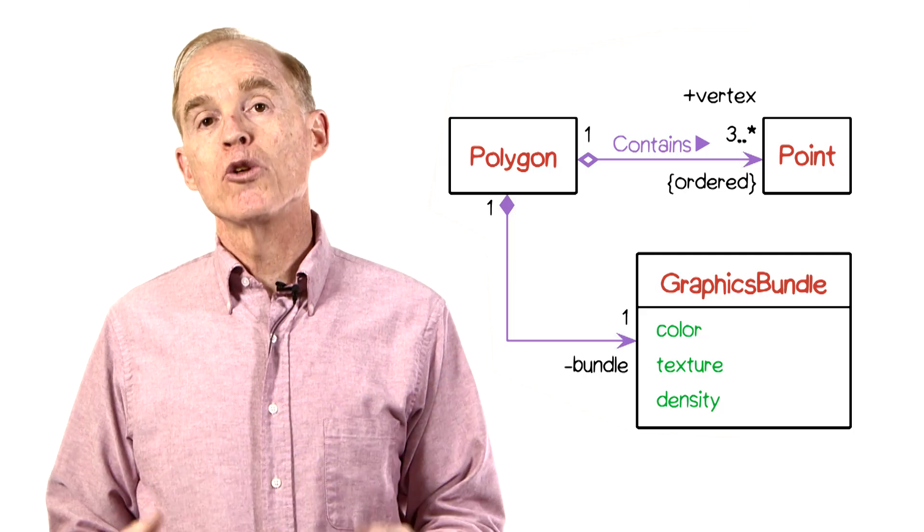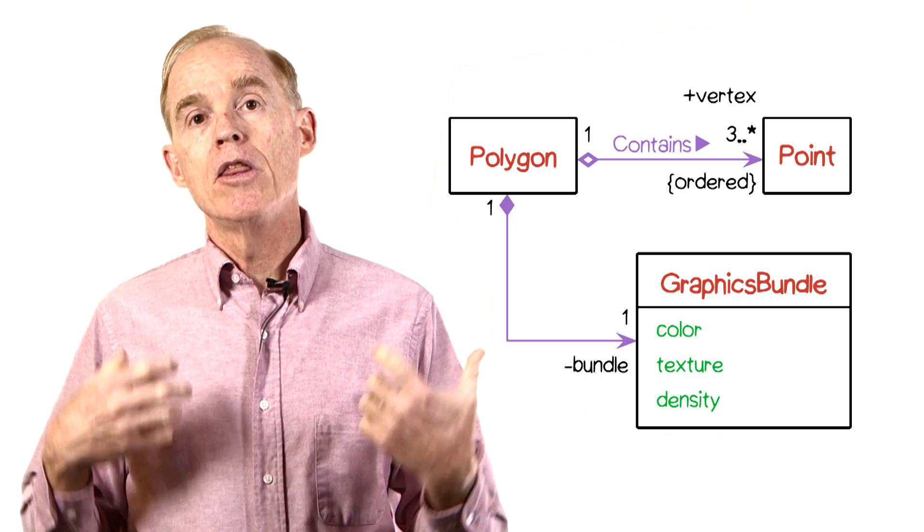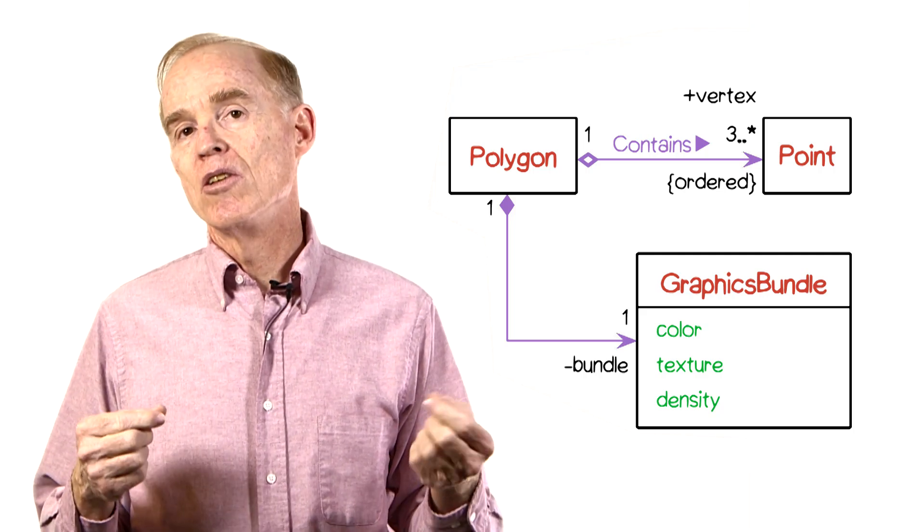You can express multiplicity. In the diagram, we saw star. We saw three dot dot star. Star means any number of instances. Three dot dot star means between three and any number of instances.